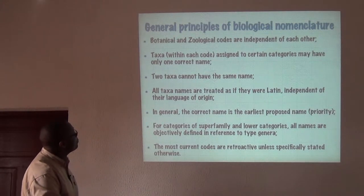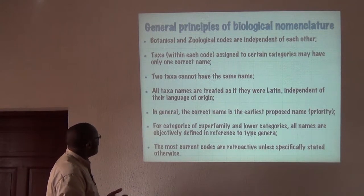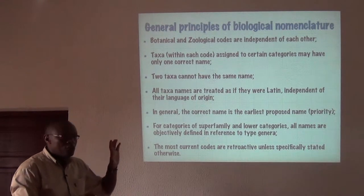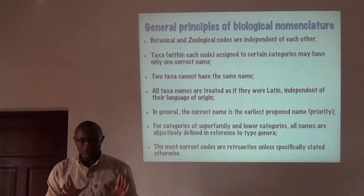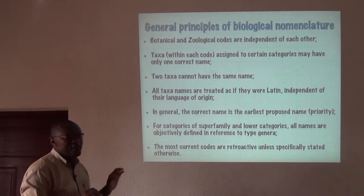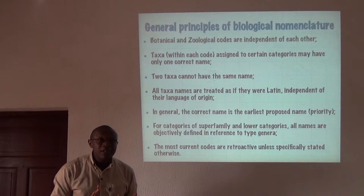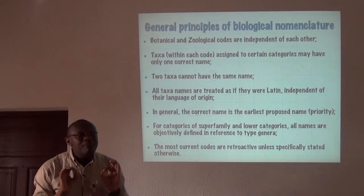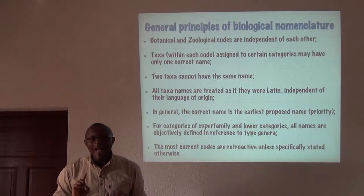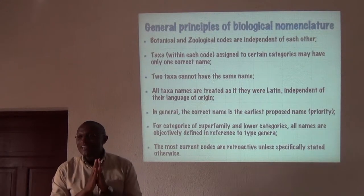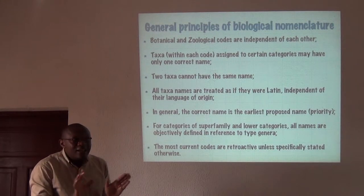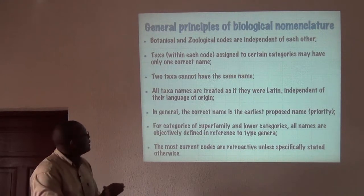What are the general principles of biological nomenclature? These principles are very important and will essentially focus on plants and animals but hold for all living organisms. The botanical and zoological codes are independent of each other, which means that an animal and a plant can have the same name without violating any rule — however, this is not desirable at all.